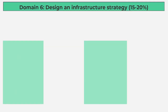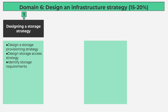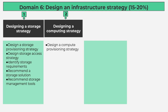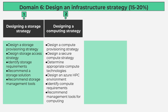Domain 6: Design an Infrastructure Strategy, 15-20%. Number 1, Designing a Storage Strategy contains 5 subtopics: design a storage provisioning strategy; design storage access strategy; identify storage requirements; recommend a storage solution; recommend storage management tools. Number 2, Designing a Computing Strategy contains 6 subtopics: design a compute provisioning strategy; design a secure compute strategy; determine appropriate compute technologies; design an Azure HPC environment; identify compute requirements; recommend management tools for computing.